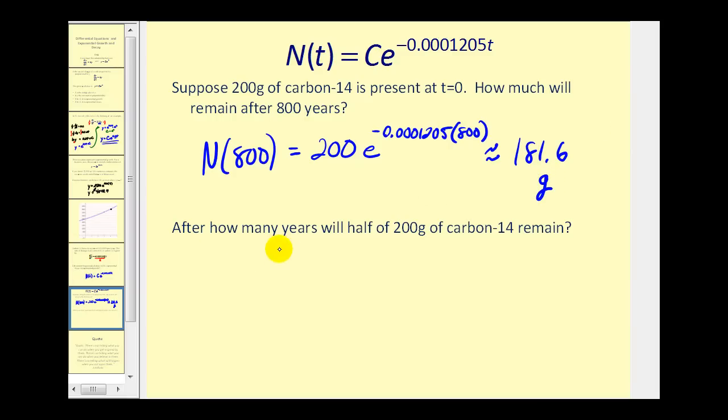And the last question, after how many years will half of 200 grams of carbon-14 remain? That would be the half-life of carbon-14. Well, this is an algebra question. If we start with 200 grams, then the amount after would be 100. We have 100 equals 200e to the power of negative 0.0001205 times t, and we have to solve this for t. So we divide both sides by 200.